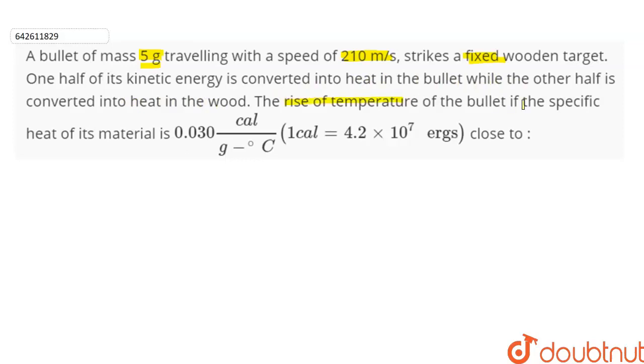The rise in temperature of the bullet if the specific heat of its material is 0.030 calorie per gram per degree celsius is close to.